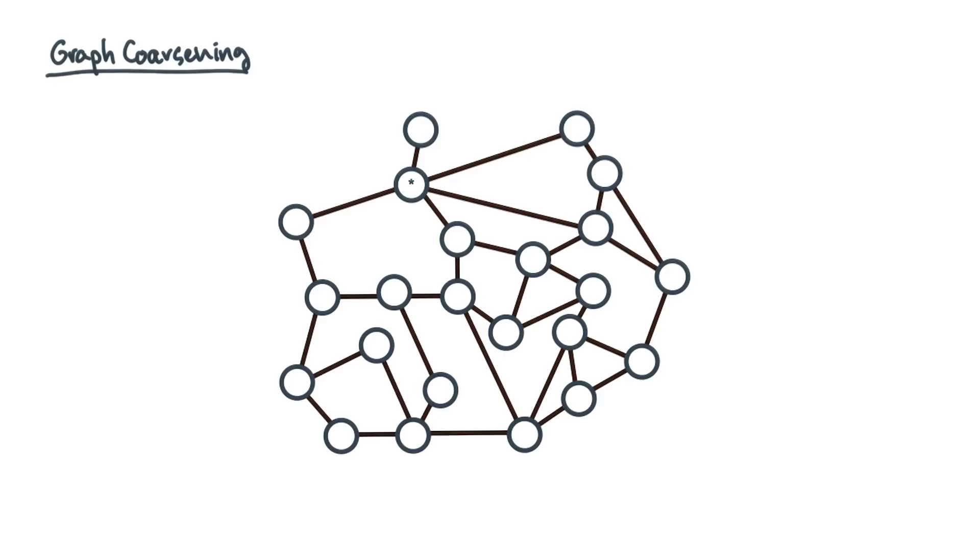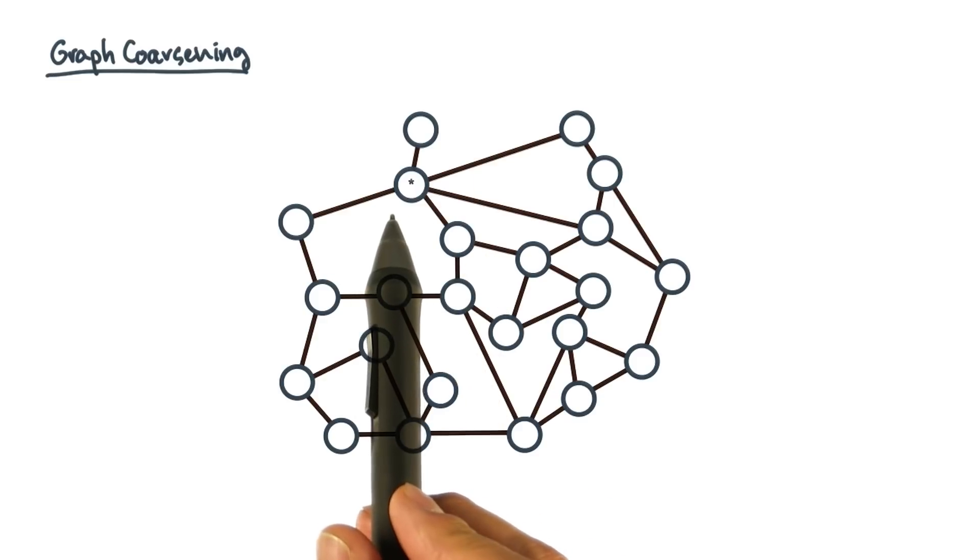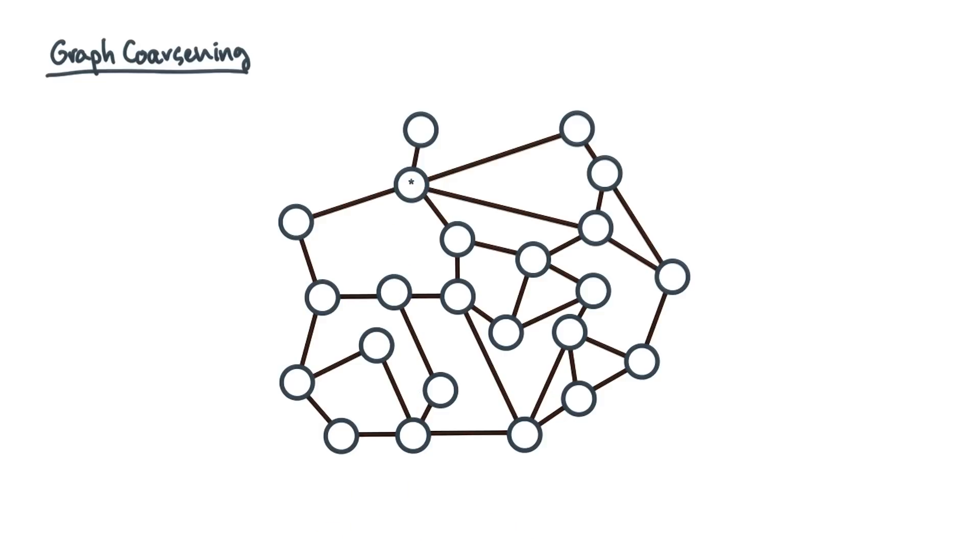Now remember that one of your partitioning goals is to obtain balanced partitions. So it's probably a good idea to track the fact that there were five vertices here that became one vertex. An easy way to do that is to assign a weight of five to the super vertex. You'll also want to track edge weights so that later on we can cut edges accurately.